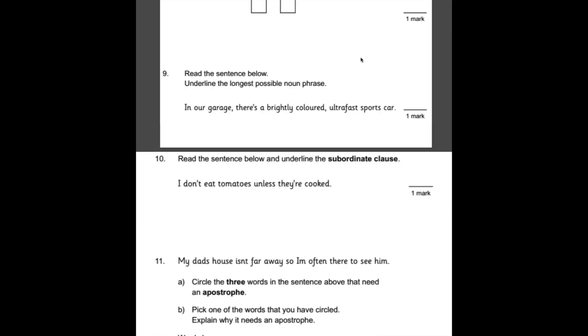For nine, read the sentence below. Underline the longest possible noun phrase. So remember, a phrase is a collection of words. And the noun phrase is a collection of words which describe the noun. And in this case, there are two nouns. We have a garage. And we also have a car. Now, the longest possible noun phrase here that describes one of those nouns would be a brightly colored ultra-fast sports car. That's just describing that one noun there.